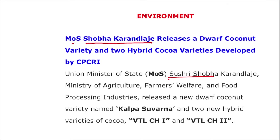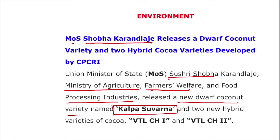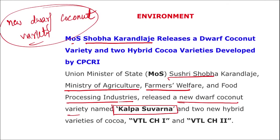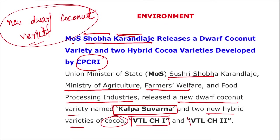Next: Union Minister Shobha Karandlaje — Minister of Agriculture, Farmers' Welfare, and Food Processing Industries — released a new draft coconut variety named Kalpa Suvarna. This variety was developed by CPCRI — the Central Plantation Crops Research Institute in Karnataka. Additionally, two new hybrid varieties of cocoa, VTL CH1 and VTL CH2, were also launched, making a total of three new varieties launched.